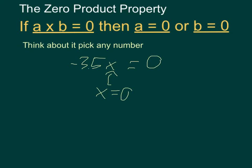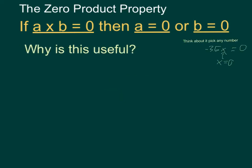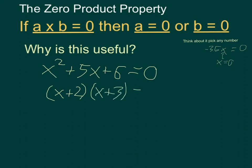This is useful because I can break bigger problems into smaller ones. So if I have something like x² + 5x + 6 = 0, an equivalent form by factoring is going to be (x + 2)(x + 3) = 0.